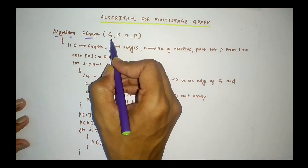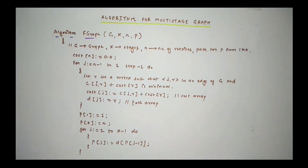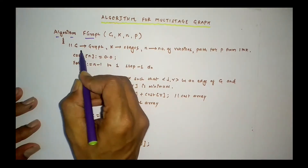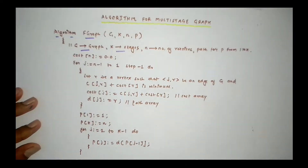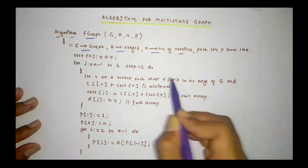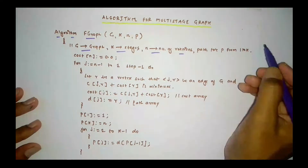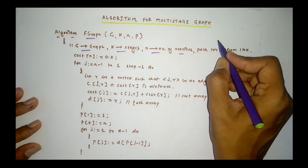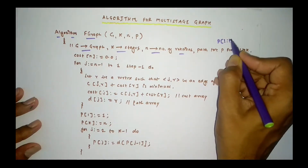Algorithm F-Graph takes four parameters: G, K, N, P. G stands for the graph, K stands for the number of stages in the graph, N stands for the number of vertices, and P stands for the path from 1 to K — that means it can be written as P(1) to P(K).